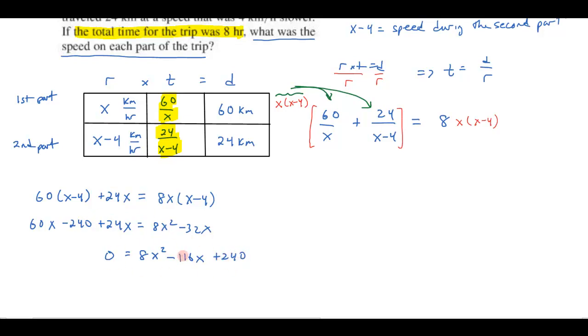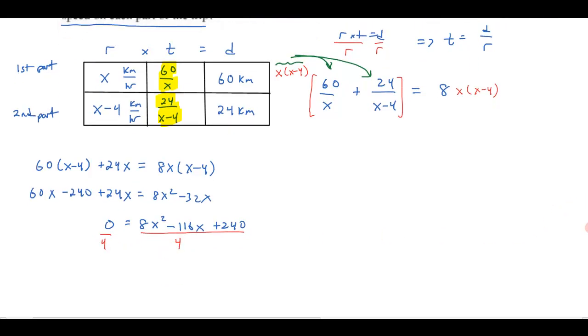So here I have a quadratic equation that I need to solve. I can make it a little bit nicer. I think 4 goes into each one of these. Let's divide both sides by 4 to make my numbers just ever so much smaller. So that'll give me 0 equals 2x squared minus, let's see, 4 goes into 116, that's 29 times, so that'd be minus 29x plus 60.